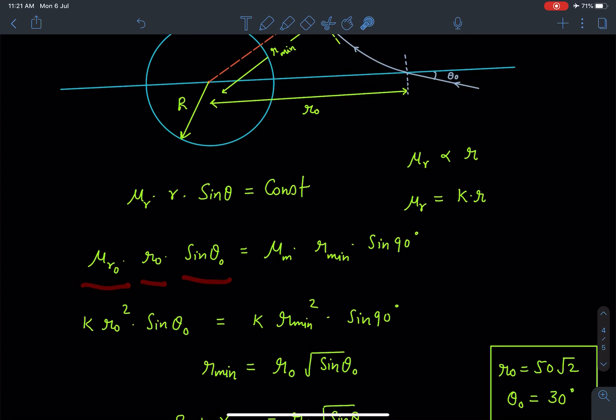At that time this light ray will become perpendicular to the radial line, then only it can be minimum. On substituting the values, I can write μ(r) as Kr, so it becomes K·r₀ times r₀, which is K·r₀² sin θ₀. Similarly, the other side is K·r_min² sin 90°.